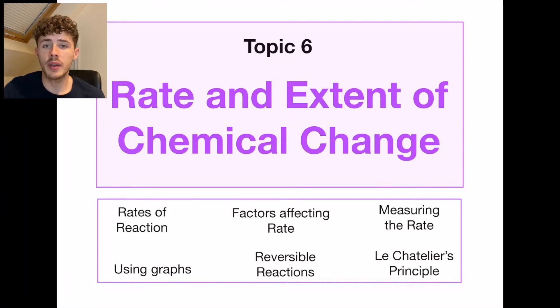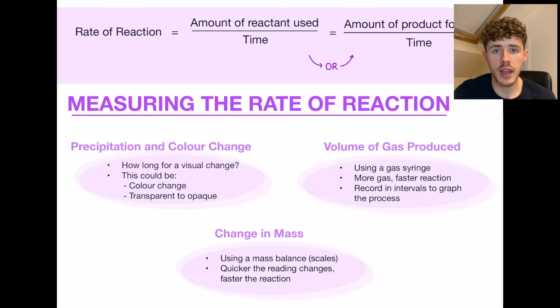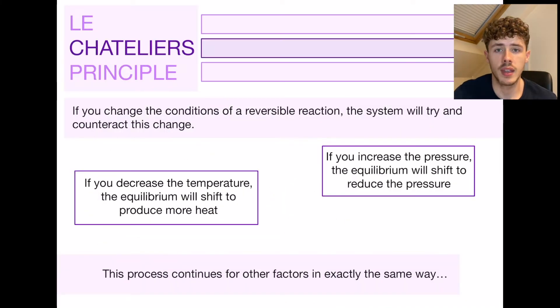In this video we will be looking at topic 6 of GCSE chemistry and that is the rate and extent of chemical change. Here are the subtopics we'll be looking at throughout this video and as always all of these pages will be available on my Etsy which is linked in the description. Thank you very much for watching and I hope you enjoy.